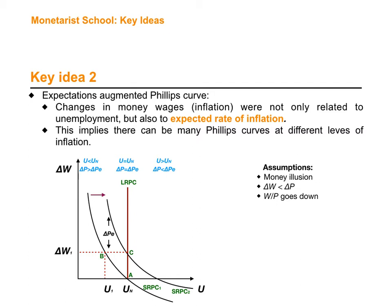Similarly, looking at the lower portion of the graph, changes in prices are going to be higher than changes in expected prices to the left of this graph. That means actual inflation in the economy is higher than expected prices. This can lead companies to produce more, because they were expecting a lower level of inflation than actual inflation. They might think prices are increasing for their products, so they produce more, hire more people, and reduce unemployment — that happens on the left side of the graph.